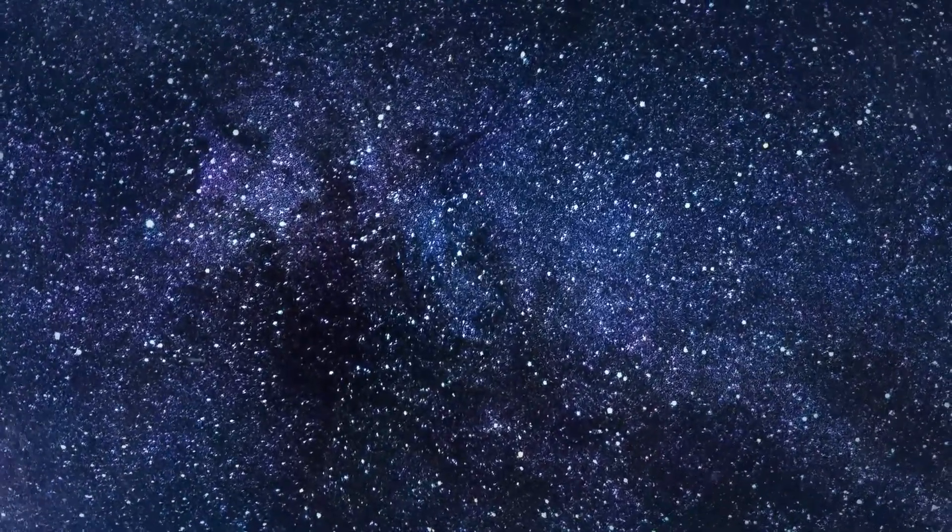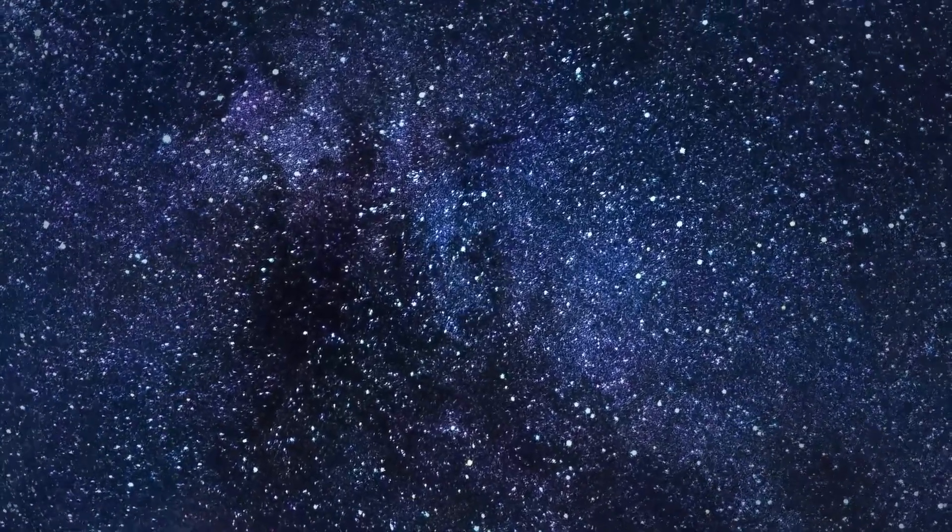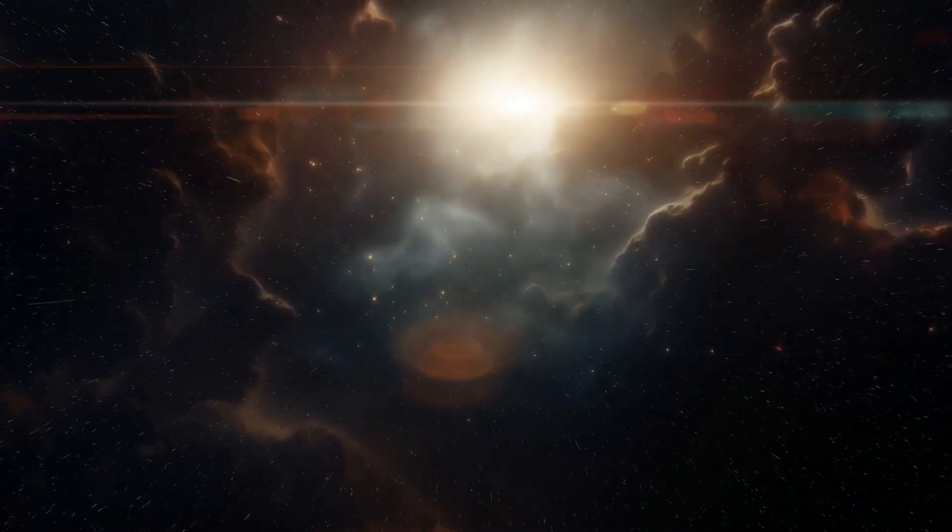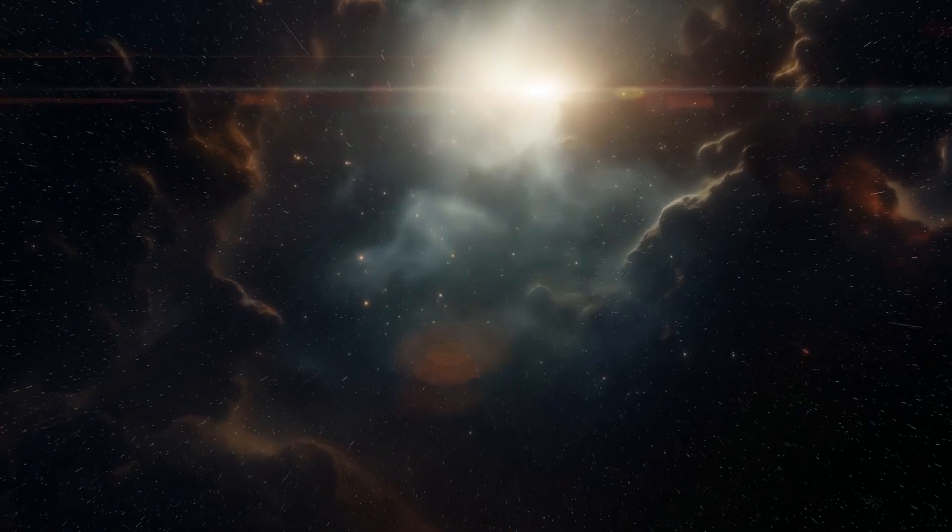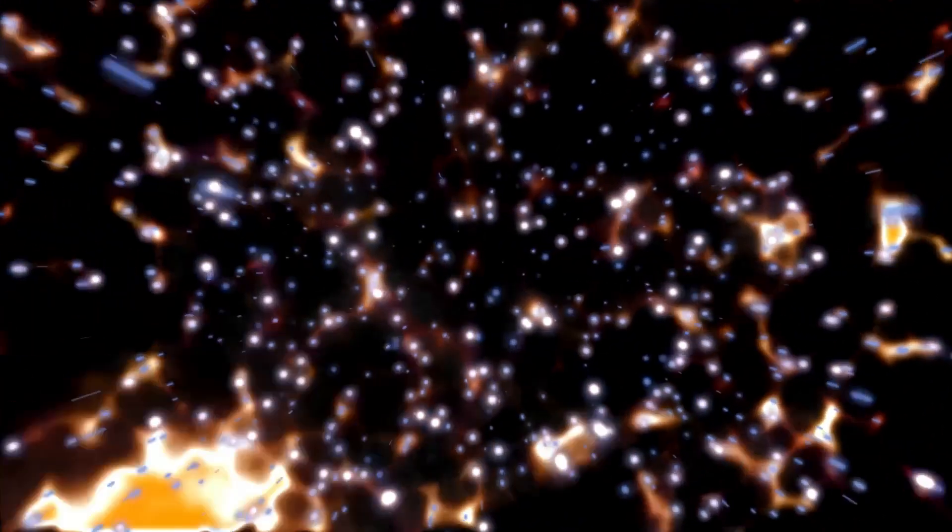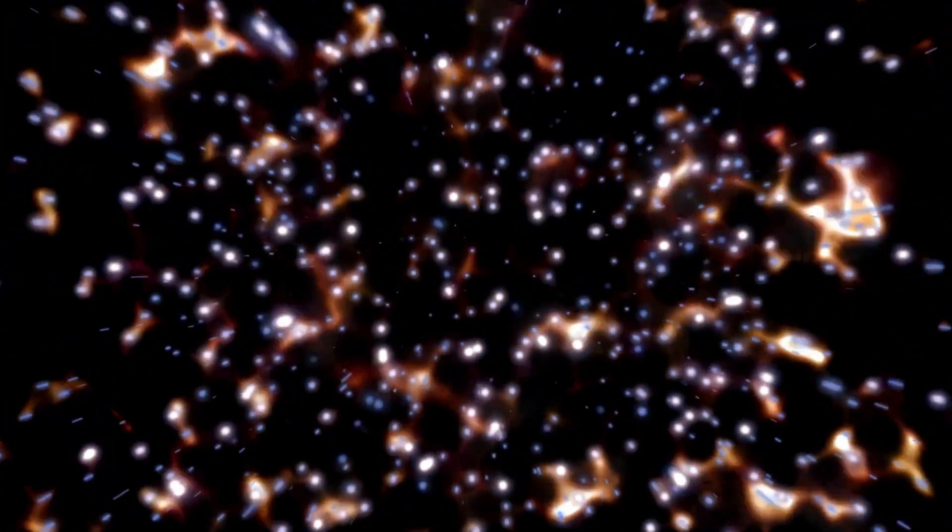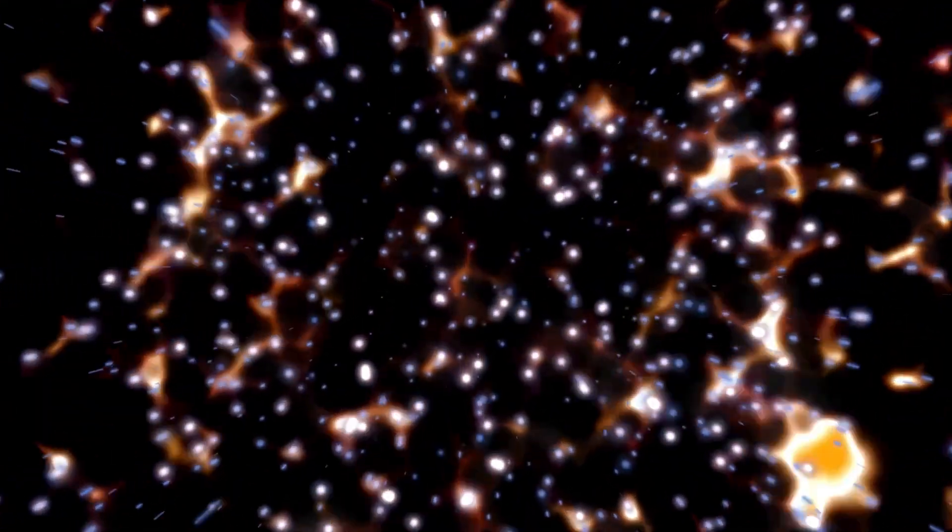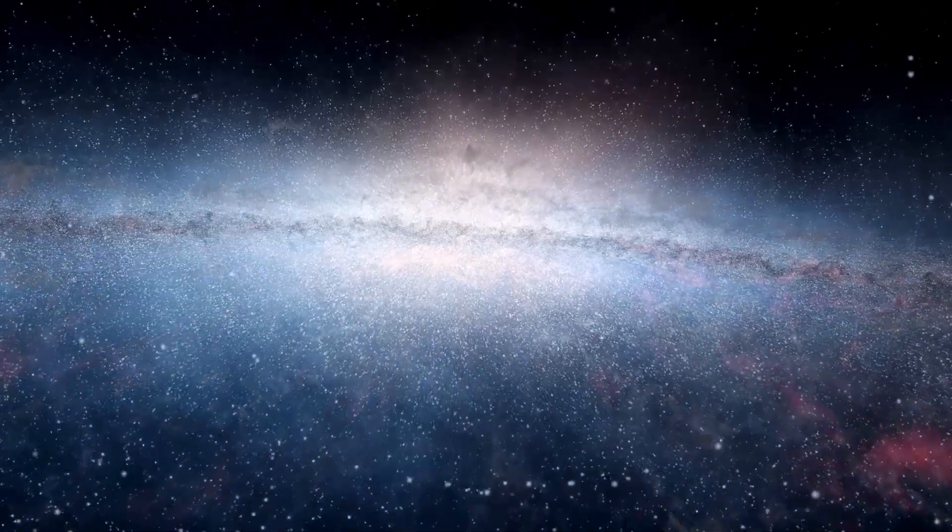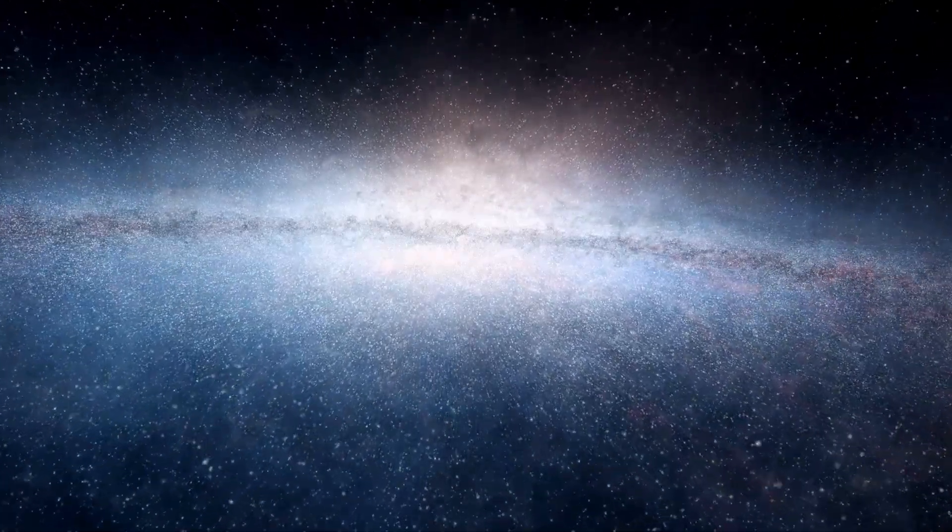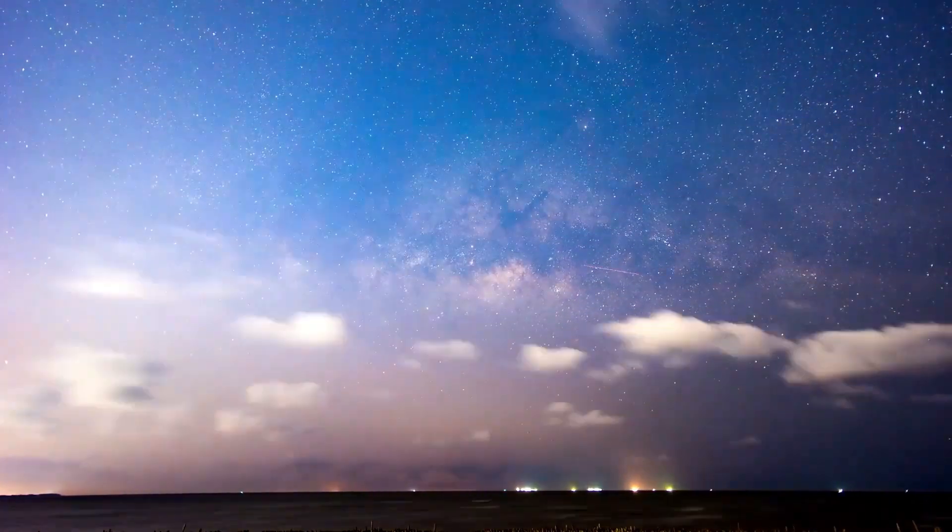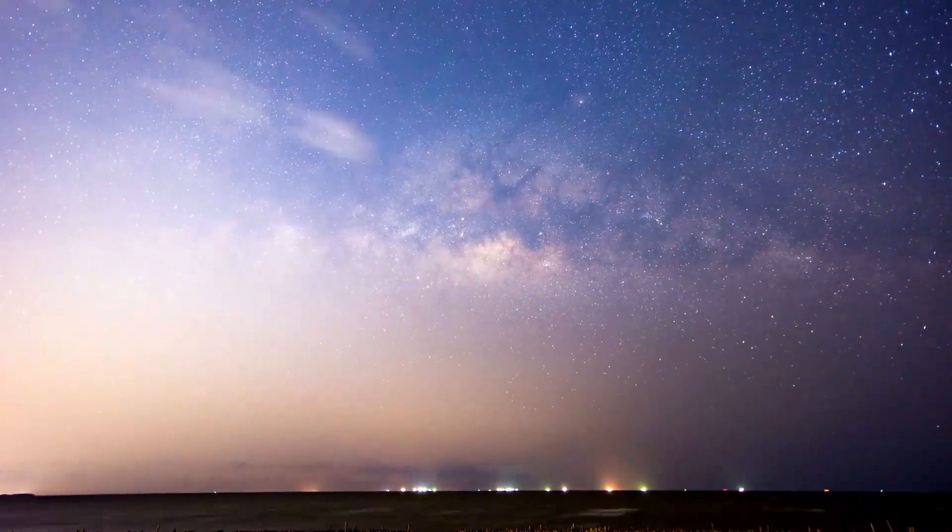Betelgeuse got brighter again after the Great Dimming and turned into something significantly more striking. Astrophysicist Andrea Dupree at the Harvard-Smithsonian Center for Astrophysics says that the star is now 150% more brilliant than normal, making it the seventh most brilliant star overhead right now. It's important to note that not all stars have the red sparkle of Betelgeuse. The red sparkle is an indication of a red supergiant star, which is the last phase of a star's life and death. The red gleam is shockingly brought about by a surface temperature of around 3,500 Kelvin, which is a lot cooler than the outer layer of the Sun, which is 5,500 Kelvin.